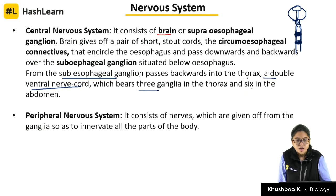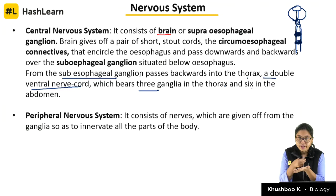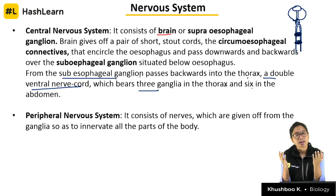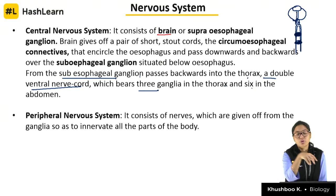Stout means slightly tough but still fine enough to break easily when dissecting. To obtain the nerve ring intact during dissection requires expertise. The peripheral nervous system consists of nerves given off from the ganglia to innervate all parts of the body. You can actually locate exactly what you see in diagrams when you do dissection.